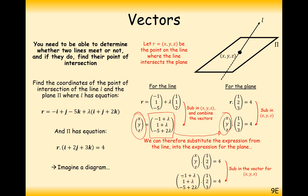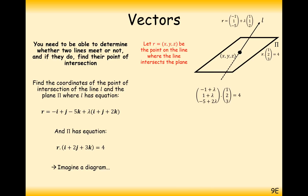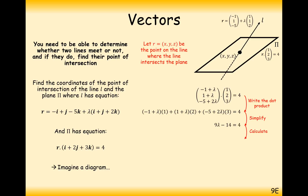So we're going to calculate (minus 1 plus lambda, 1 plus lambda, minus 5 plus 2 lambda) dotted with (1, 2, 3) equals 4. We can therefore substitute the expression from the line into the expression for the plane. Doing the dot product gives a big long equation equals 4 on the right-hand side. From this equation we should be able to work out lambda, and rearranging we get lambda equals 2.